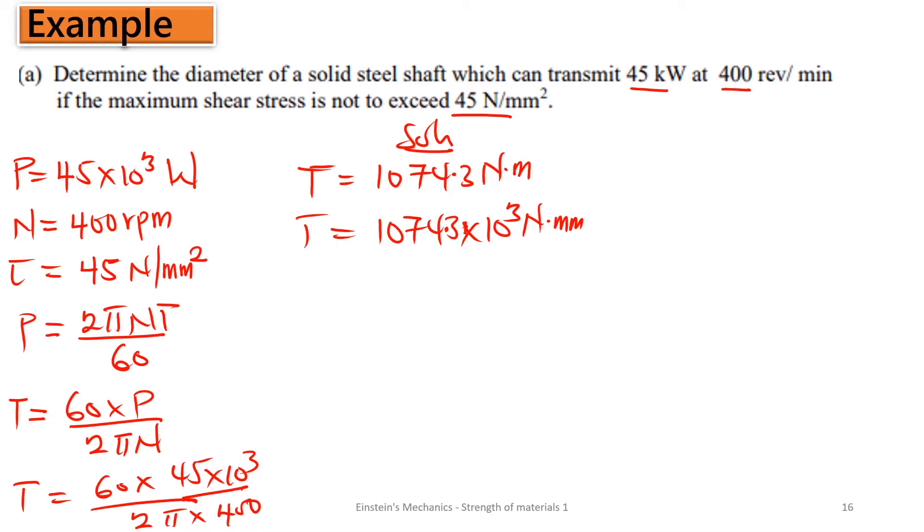This is going to give us a torque as 1074.3 newton meter. If we are to turn this to millimeter, that is 1074.3 to the power positive 3 newton millimeter. So now that we have the torque, we also have an expression which says torque on the polar moment is equal to the shear on the radius.